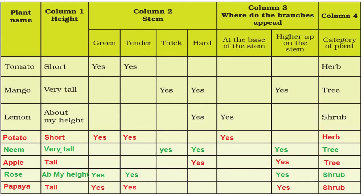Potato is short, the stem is green and tender, branches appear at the base of the stem — so it is a herb. Neem is very tall, the stem is thick and hard, branches appear higher on the stem — so it is a tree. Apple is tall, the stem is hard, branches appear higher up on the stem — so it is a tree.